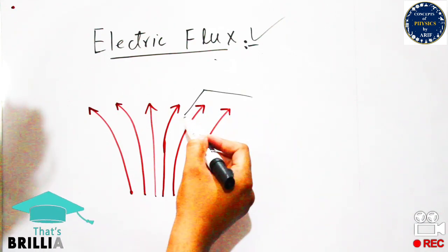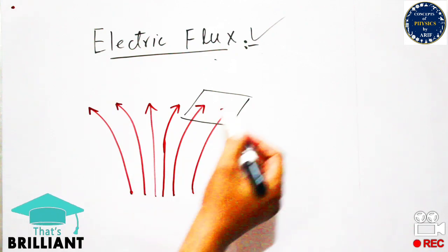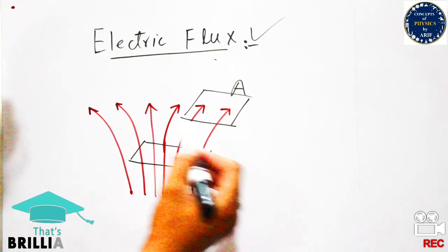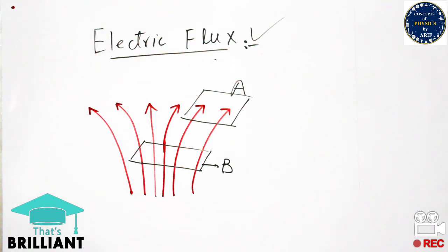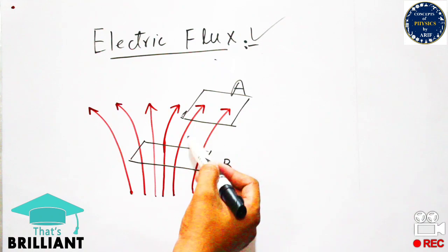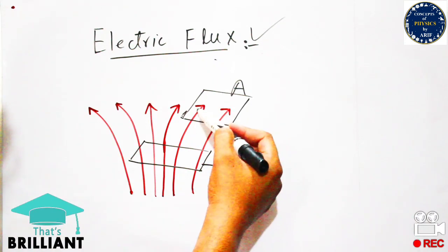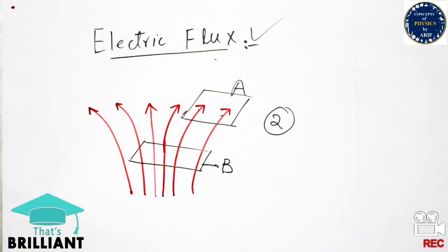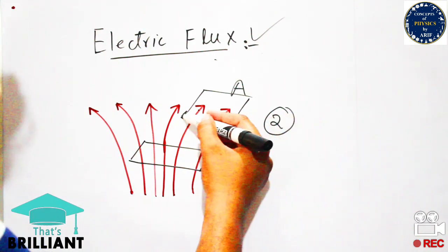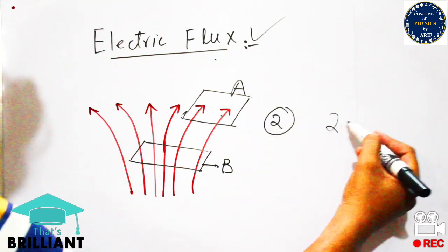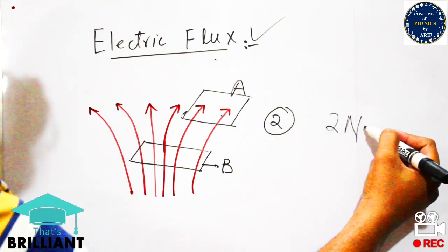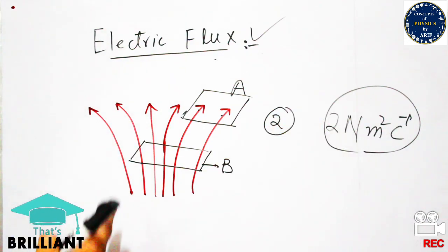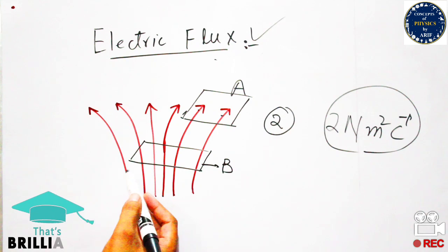We need to count the number of electric field lines passing through some area which is present in the vicinity of the electric field. I have made two areas, known as area A and area B. In area A, only two electric field lines are passing, so the electric flux is two. The unit of electric flux is newton times meter squared per coulomb, because the electric field has units of newtons per coulomb and it's passing through some area.